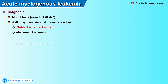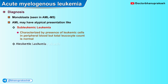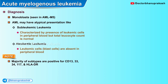Sub-leukemic leukemia is characterized by the presence of leukemic cells in the peripheral blood but with a normal total leukocyte count, whereas aleukemic leukemia is characterized by the absence of leukemic blast cells in the peripheral blood. The majority of AML subtypes are positive for CD13, CD33, CD34, and CD117 along with HLA-DR positivity.